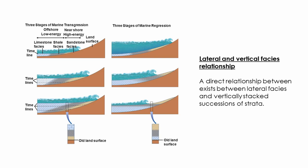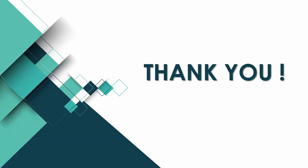We can see that the limestone facies is moving toward the land surface. If we consider the vertical facies, we can see the same sequence repeating itself. This applies also to marine transgression and marine regression. That was all for the facies relationship — thank you everyone for your attention.